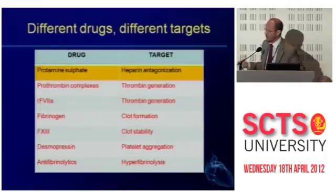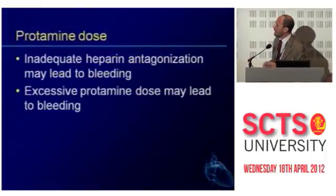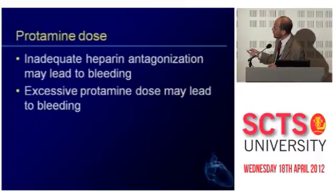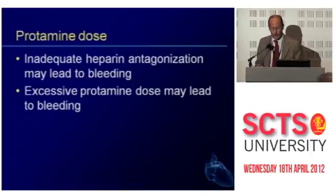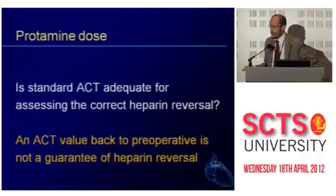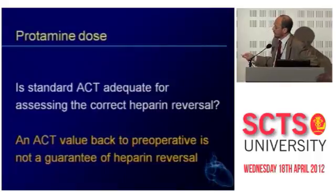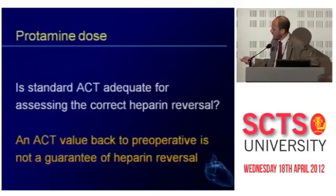This seems a simple thing — we just have to give protamine to antagonize heparin. But protamine is something not that well defined. If we have inadequate heparin antagonization, we will have bleeding. But if we have excessive protamine, this will also lead to bleeding. My personal feeling is that the standard ACT is not a valuable test for addressing the protamine dose. I've seen dozens of patients with an ACT back to normal that still have heparin on board.